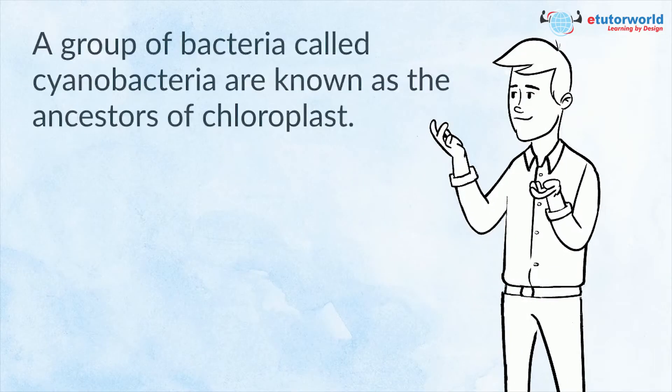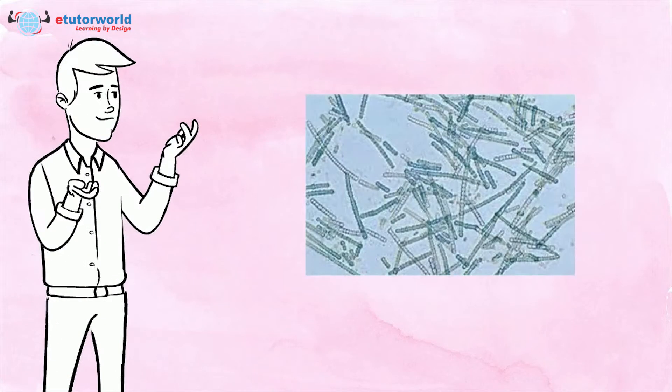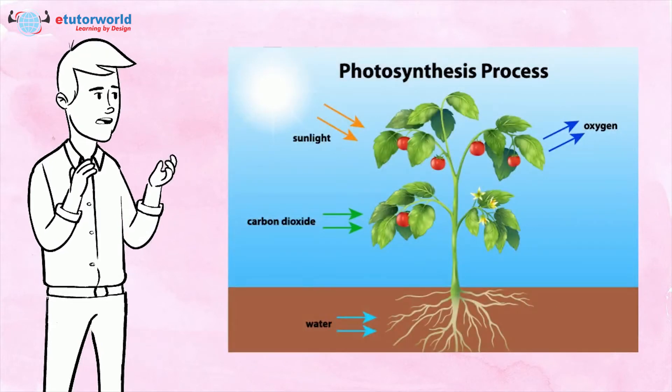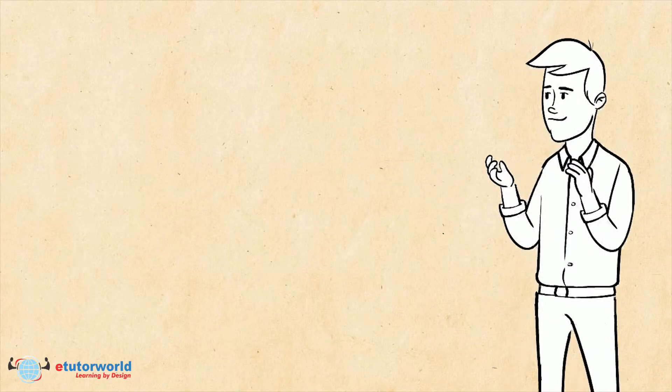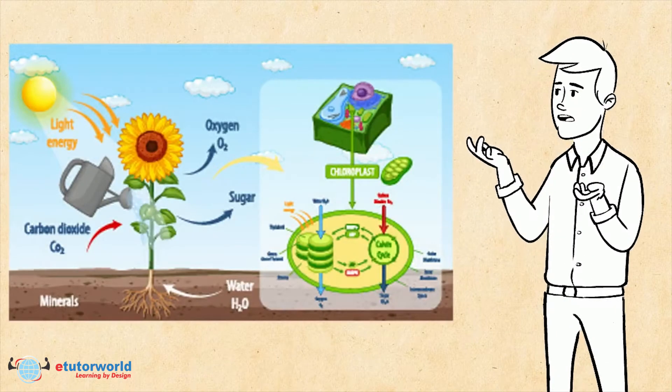A group of bacteria called cyanobacteria are known as the ancestors of chloroplasts. Millions of years ago, these bacteria began the process of photosynthesis when they were consumed by eukaryotic algae. The bacteria were retained as an organelle and kick-started the process of photosynthesis.